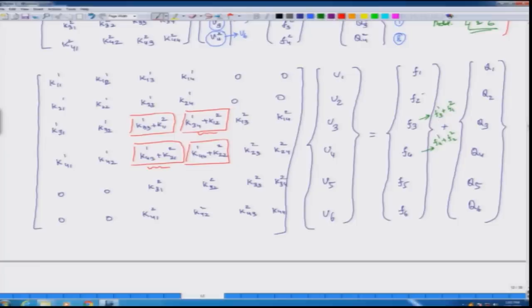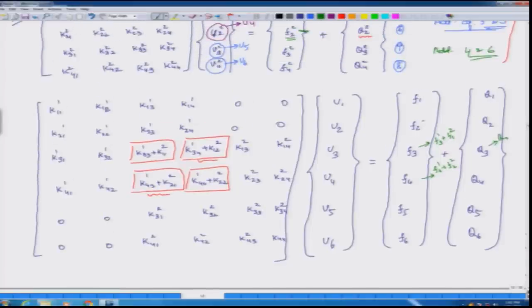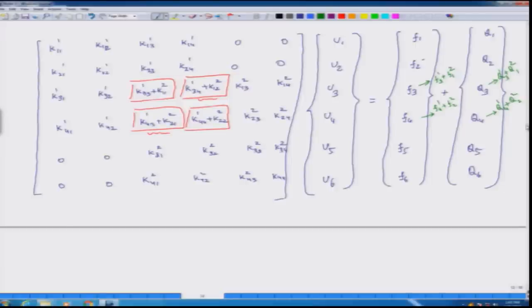On the right side, I have the force vector due to distributed force and also a force vector due to concentrated loads, generalized loads. So this one q3 is equal to q3_1 plus q1_2 and q4 is equal to q4_1 plus q2_2. So at this stage, we are ready to apply the boundary conditions, but before we apply the boundary conditions, we make couple of other observations.